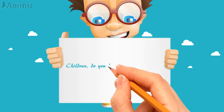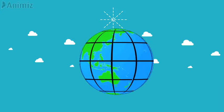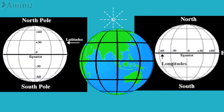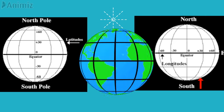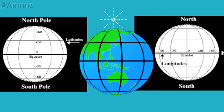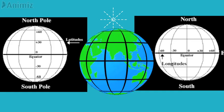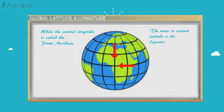Children, do you know there are some more imaginary lines drawn on the globe? Look at this globe. There are some horizontal lines and some vertical lines. These horizontal lines are called latitudes and the vertical lines are called longitudes. One more important thing is that among these latitudes, the main or the central latitude is the equator, while the central longitude is called the prime meridian.